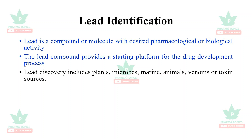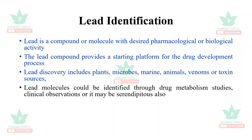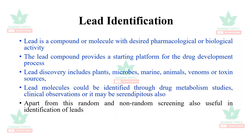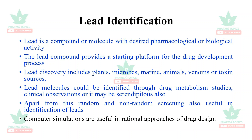Lead discovery includes finding leads from plants, microbes, marine sources, animals, and venoms or toxin sources. Lead molecules could also be identified through drug metabolism studies, clinical observations, or through serendipity. Random and non-random screening are also useful in identification of leads. Computer simulations are useful in rational approaches of drug design where leads could be modified.